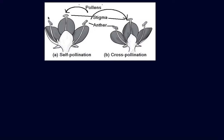In this picture, you can see that the pollen grains from the anther are sticking to the stigma of the same flower. This is the stigma, this is the style, and this is the ovary. These are the filament and anther — this is the male reproductive part and this is the female reproductive part.